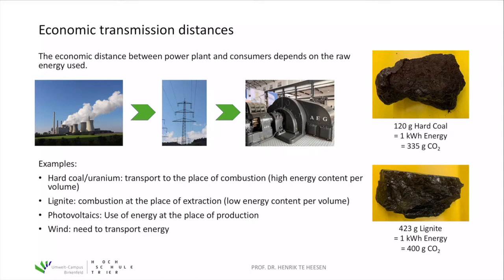To get one kilowatt-hour of energy, you need about 20 grams of hard coal or about three times the mass of lignite. The energy density of lignite is three times smaller than hard coal, making it unaffordable to transport lignite over long distances. Therefore, lignite power plants are installed close to the quarries.